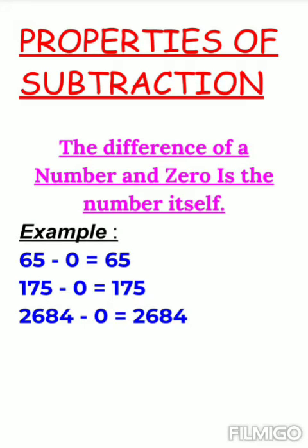Now children, we'll be doing properties of subtraction. Take out page number 31 of your book and you can see what is the property of subtraction. The difference of a number and zero is the number itself. That means that if you subtract zero from any number, then what answer will you get? You will get that number only.